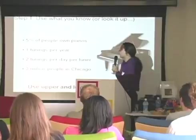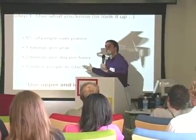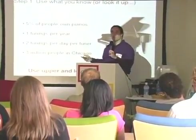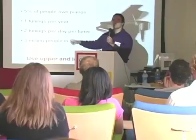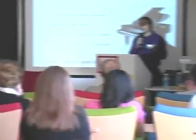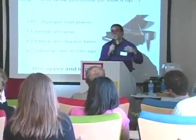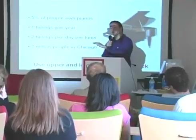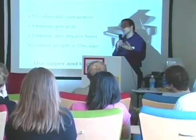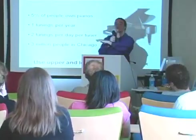The first step is to use what you know, or look up what you don't know. I can start by saying I don't know offhand how many piano tuners are in Chicago. But I know roughly 5% of my friends — about one out of 20 — own a piano. If I go down my Facebook page, 5% seems like a reasonable number. You could be way off on that, but I know it's less than 50% of people, and it's also more than one out of every 200 people, because I know quite a few people with pianos. So I know it's somewhere within reasonable bounds.